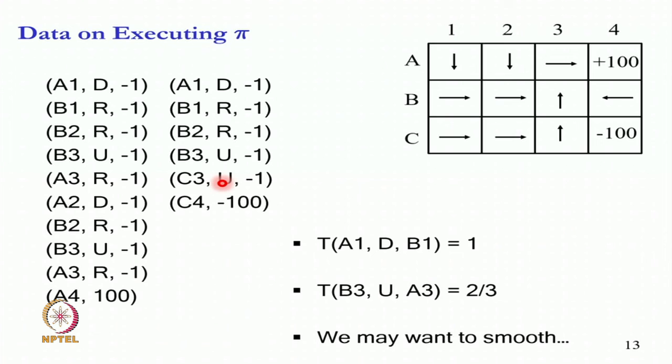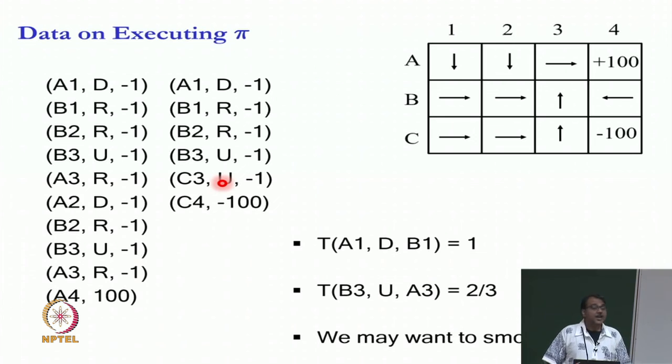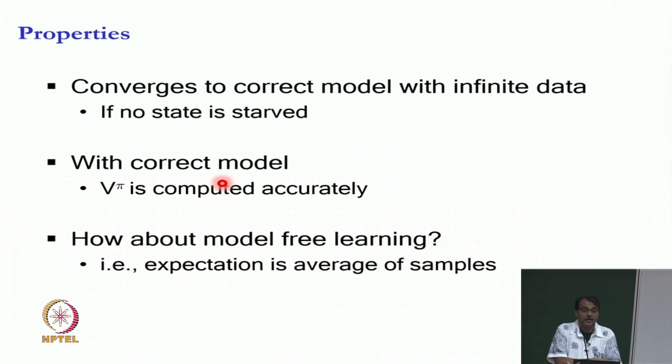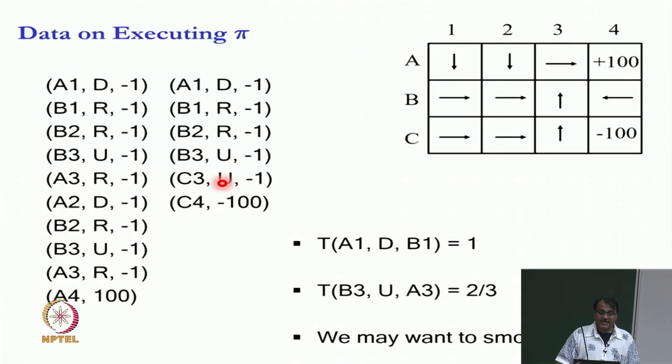So somebody sampling a coin and giving me a reward, that is also possible. And the model takes care of it by just saying that I will compute the average reward. So now I have been able to compute the transition function. Once I have been able to compute the transition function, I can just put it in the equation that I had and compute v pi. This is called model based learning. It converges to the correct model with infinite data. If no state is starved with the correct model, v pi is computed accurately. And now the question is how do we do model free learning, right? By using expectation as the average of samples. So this is model based learning because I am estimating the model and then taking expectation by using the formula for expectation.